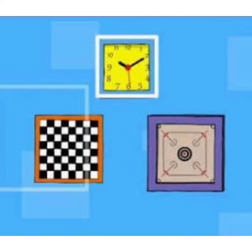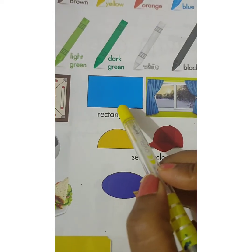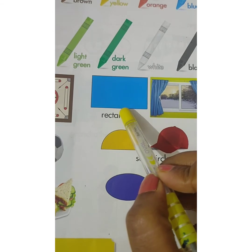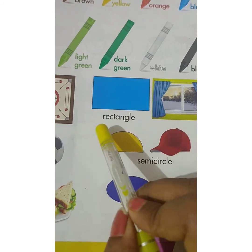These are some more square shape objects like wall clock, chess board, and carom board. This is a rectangle.